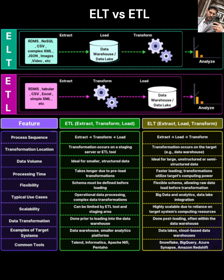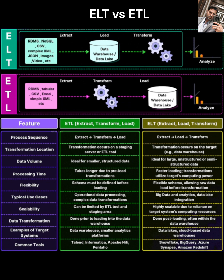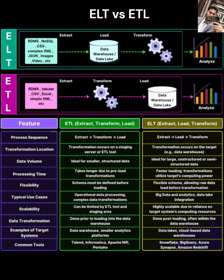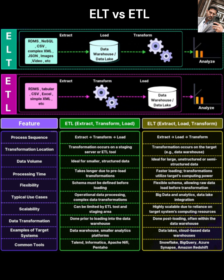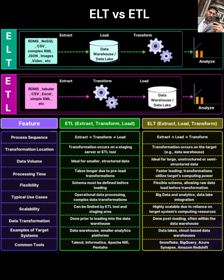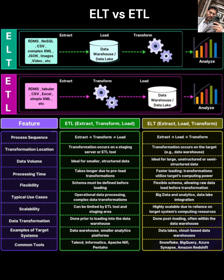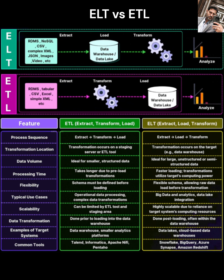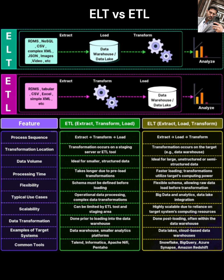Load: this is the big difference. You load the raw, untransformed data directly into your target system, typically a modern data warehouse or data lake. Transform: the transformation happens after the data is loaded, within the target system itself. You use the computing power of your data warehouse or data lake to perform cleaning, restructuring, and analysis directly on the data that's already stored there. ELT is like dumping all your ingredients into a giant blender or mixing bowl first, and then doing all the cutting, mixing, and pureeing inside that container, using the container's own motor and blades.